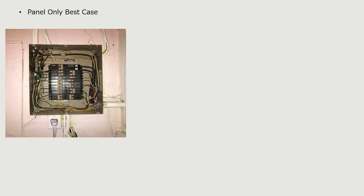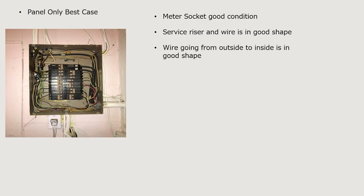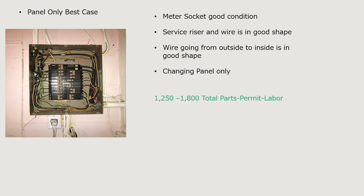Let's start with the panel change only — this is the best-case scenario. There are lots of different things that could change this price, so I give a very large range to accommodate for some of those. This assumes your meter socket outside is in good condition and I only have to replace the panel. It also assumes code doesn't require a disconnect, the riser wire is in good shape, and the wire going from outside to inside can be reused.